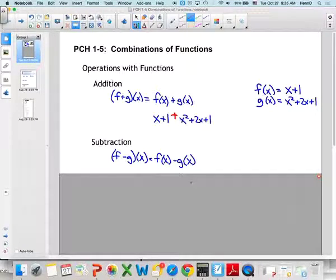x squared plus 3x, x and 2x is 3x, plus 2. That's not too bad.